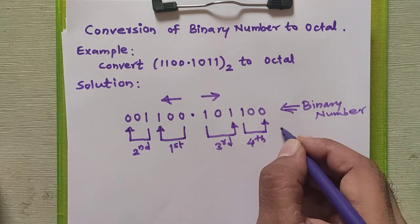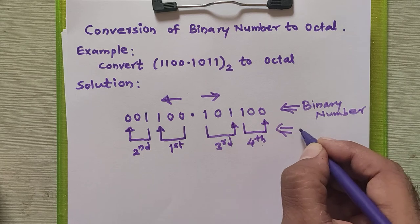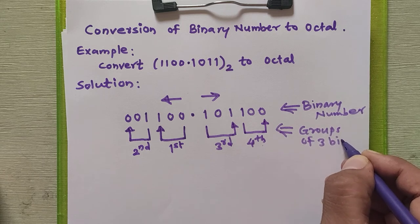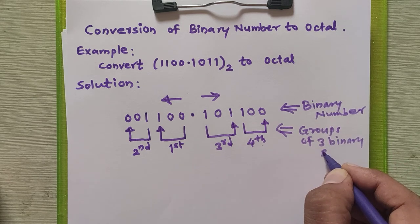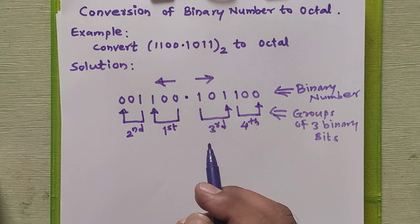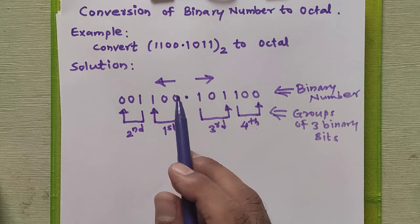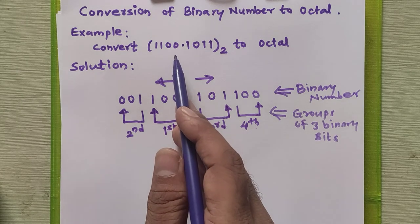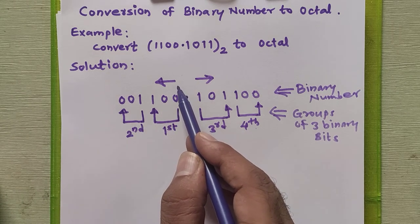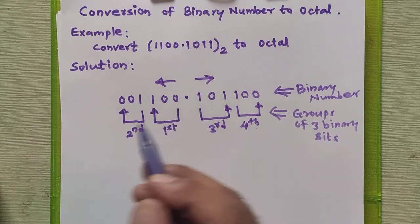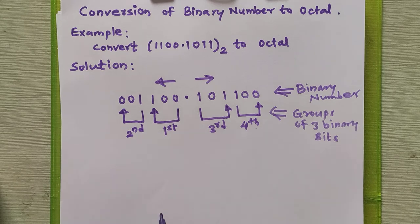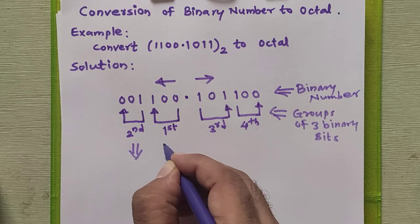So this is the fourth group. This was the binary number given to us, and these are the groups of three binary bits. In this process of conversion of binary to octal, from a given number we form a group of three bits. For the integral part we form the group from right to left, whereas for the fractional part we form the group from left to right. We got four groups in this problem to get the exact octal equivalent.